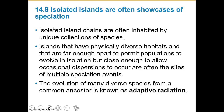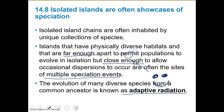Isolated islands are showcases of speciation. Isolated island chains are often inhabited by unique collections of species — that's the whole thing about Darwin and the Galapagos. Islands that have physically diverse habitats and are far enough apart to permit populations to evolve in isolation, but close enough to allow occasional dispersal from other sites, often have multiple speciation events. The evolution of many diverse species from a common ancestor is known as adaptive radiation: we start with one common ancestor, and as things move to different islands, they change a little bit.